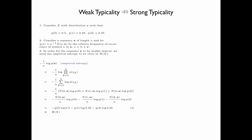We want to make this close to the entropy of x, which is given by minus p(0) log 0.5 minus p(1) log 0.25 minus p(2) log 0.25, that is minus 0.5 log 0.5 minus 0.25 log 0.25 minus 0.25 log 0.25. Thus, we have to choose q(0), q(1), and q(2) such that expressions 1 and 2 are close to each other, which in this case can actually be made to be exactly the same. Note that we have log 0.5 and log 0.25 appearing in both expressions.